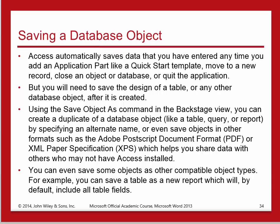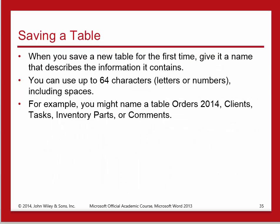You can save some objects as other compatible object types. For example, you can save a table as a new report which will include all the table fields. When you save a new table for the first time, give it a name that describes the information it contains, just like you would a new file. You can use up to 64 characters including spaces.